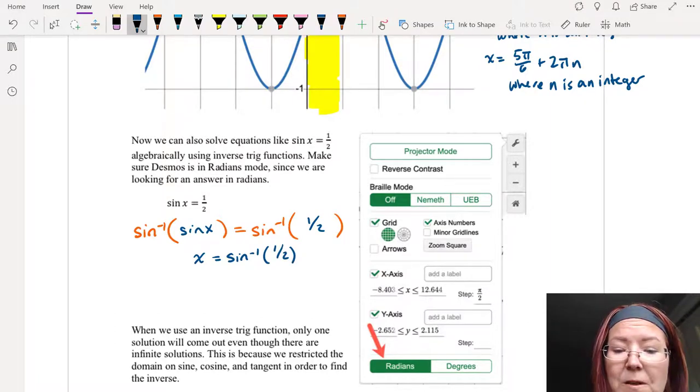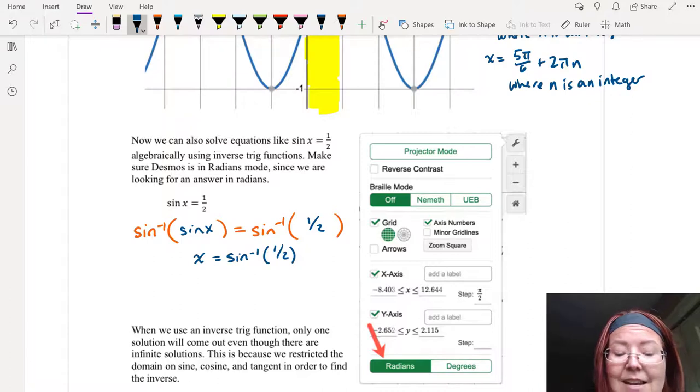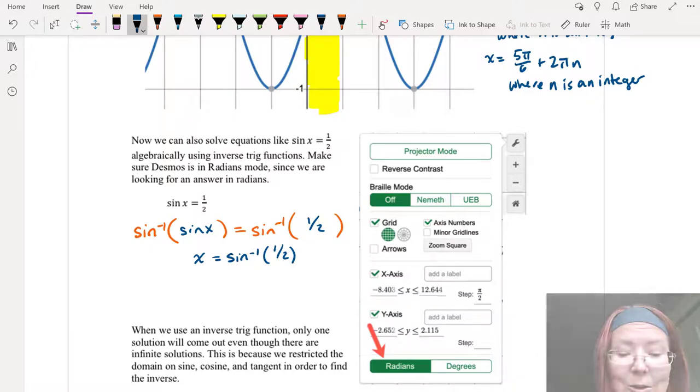Now you need to be really careful here because if your calculator is set for radians, your answer will come out in radians. And if your calculator is set for degrees, your answer will come out in degrees. Let's take a look at that.